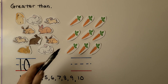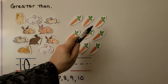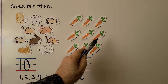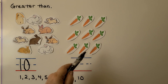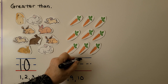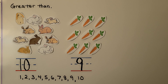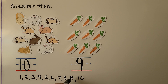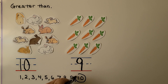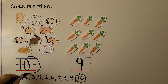We can count the carrots: one, two, three, four, five, six, seven, eight, nine. There are nine carrots. We need to circle the number that is greater. The number that is greater comes after in counting order. Here's nine and here's ten. Ten comes after nine, so ten is the greater number. Ten is the number we circle.